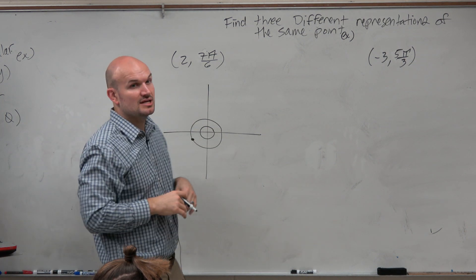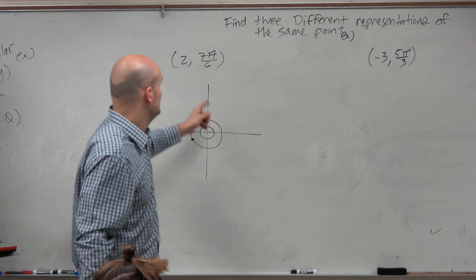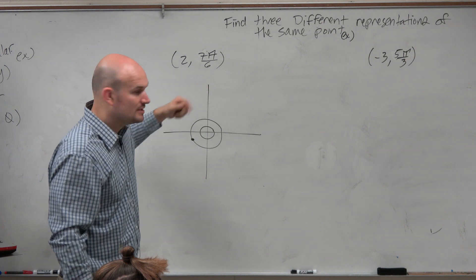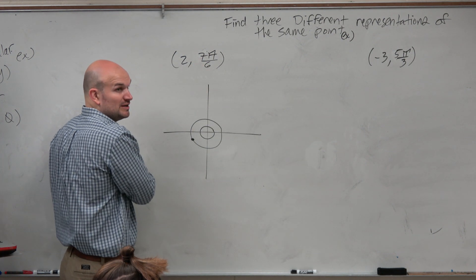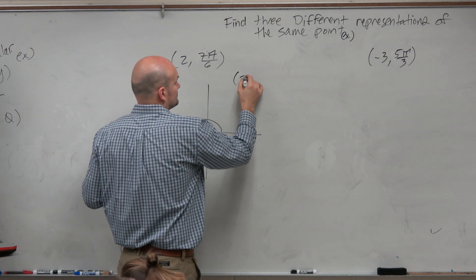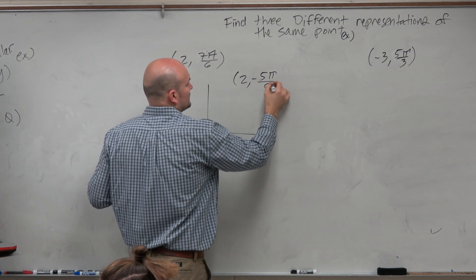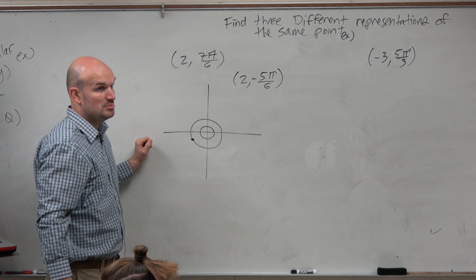Now, basically what it's asking is, find another way to represent the exact same point, but with a different representation. So in this case, we use the positive angle. Could we also use the negative angle? Negative angle would be negative 5π over 6. Agreed?